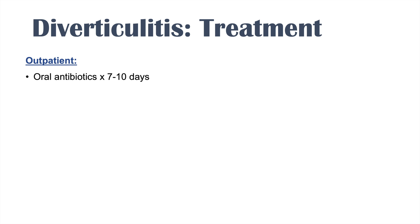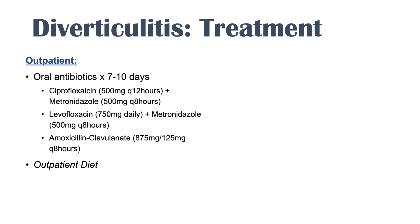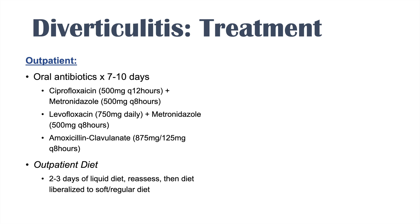As an outpatient, uncomplicated diverticulitis without any additional concerns is treated with oral antibiotics for 7 to 10 days. Options include ciprofloxacin and metronidazole, levofloxacin and metronidazole, or amoxicillin-clavulanate. Patients are also put on a specialized diet — generally 2 to 3 days of a liquid diet only. If they're getting better, the diet is liberalized to soft food and then slowly advanced to a regular diet.